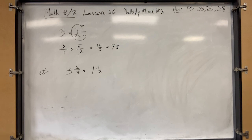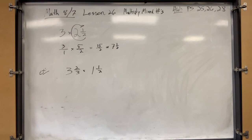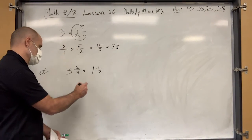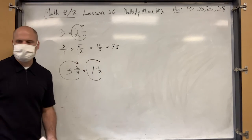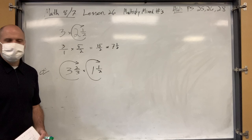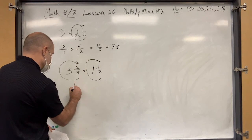Grace says 33 over six — that was really fast. Carol got 11 over two, which is the same as 33 over six. Hunter got 11 over two as well. What did you do first, Cara? She converted to improper fractions: three and two-thirds becomes 11 thirds, and the other becomes three halves.